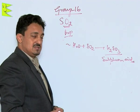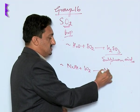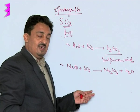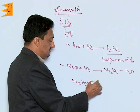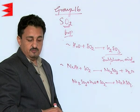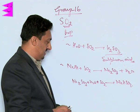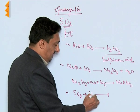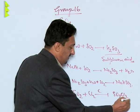When SO2 is reacted with NaOH solution, it forms sodium sulphite (Na2SO3) and water. When SO2 is passed in excess through Na2SO3 solution, it forms sodium bisulphite (NaHSO3). When SO2 is heated with chlorine in the presence of charcoal as a catalyst, it forms sulphuryl chloride (SO2Cl2).